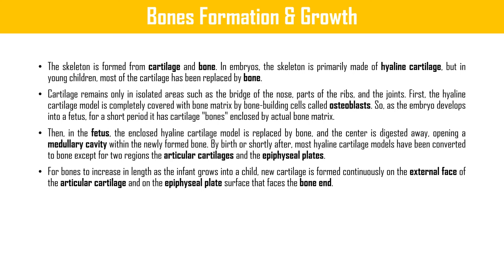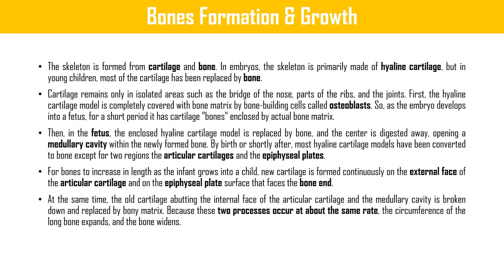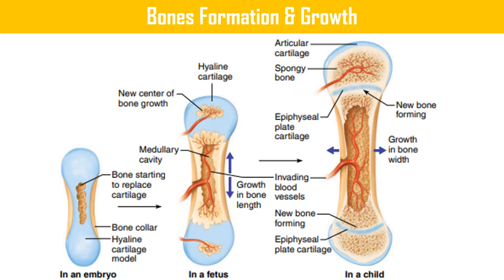At the same time, old cartilage abutting the internal faces of articular cartilage and the medullary cavity is broken down and replaced by bone matrix. Because these two processes occur at the same rate, the circumference of the long bone expands and the bone widens. You can see diagrams showing bone growth in an embryo, in a fetus, and in a child.